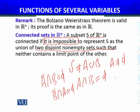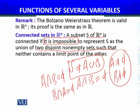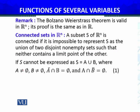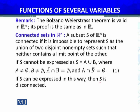Additionally, A is not the empty set and B is not the empty set. It is impossible to write S as A union B with these properties — disjoint, and neither set containing limit points of the other. If S can be expressed in this way, then S is disconnected.